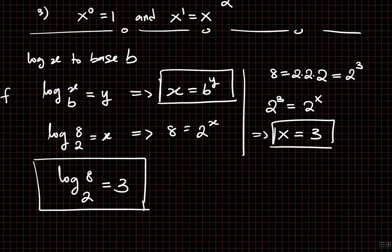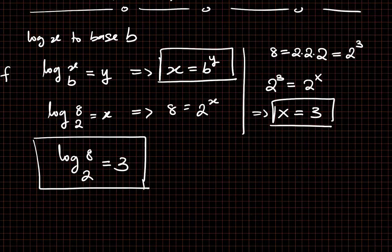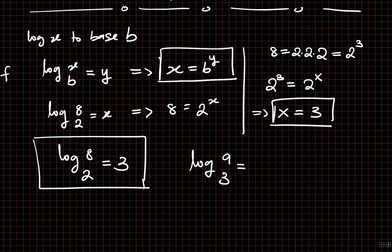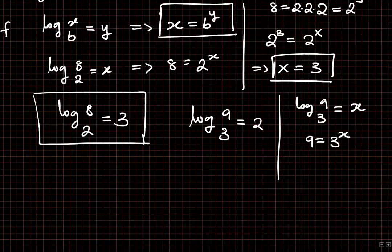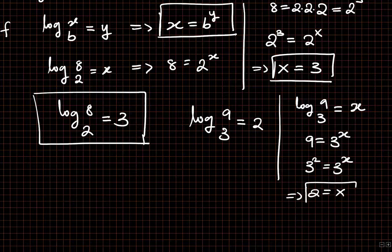Keep in mind that the log of x to base b is the number to which b must be raised in order to give x. For example, the log of 9 to base 3 is going to be equal to 2. If we let log 9 to base 3 equal x, that would mean 9 is equal to 3 raised to the power x. Since 9 is the same as 3 squared, this equals 3 raised to the power x, which means 2 is equal to x. So the log of 9 to base 3 is simply equal to 2.